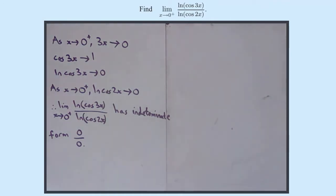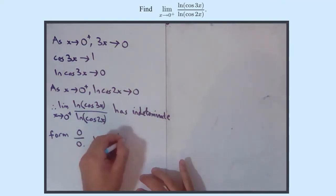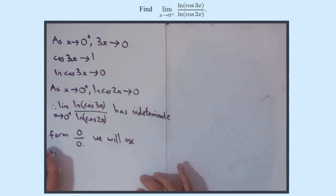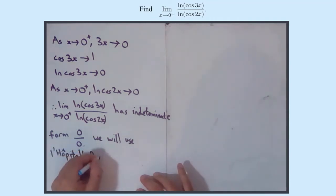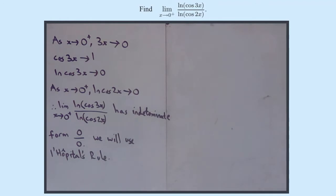So one option, when we have indeterminate form, is to use L'Hôpital's rule. We will use L'Hôpital's rule. Just thinking about why we can do this — both log functions around 0, approaching from the right-hand side, you've got positive inputs going into that log, so it's continuous there and differentiable there, so it's no problem. It will probably work, and get us to where we want.